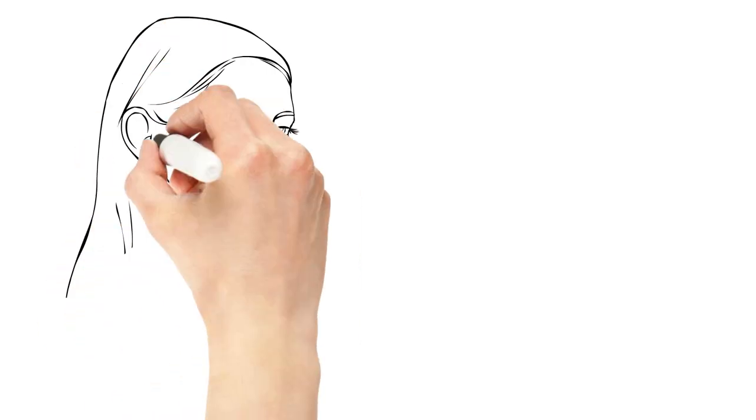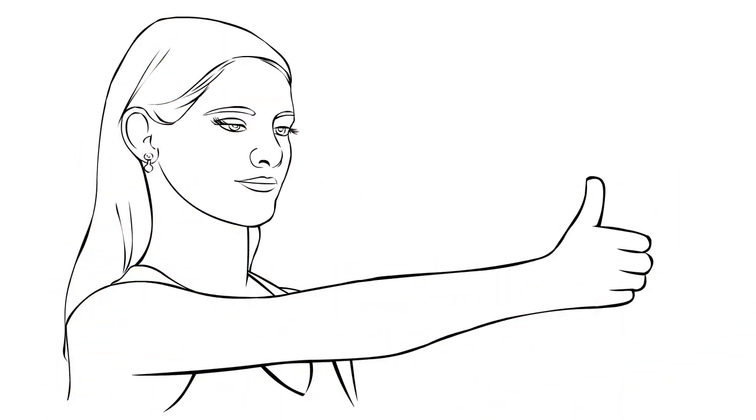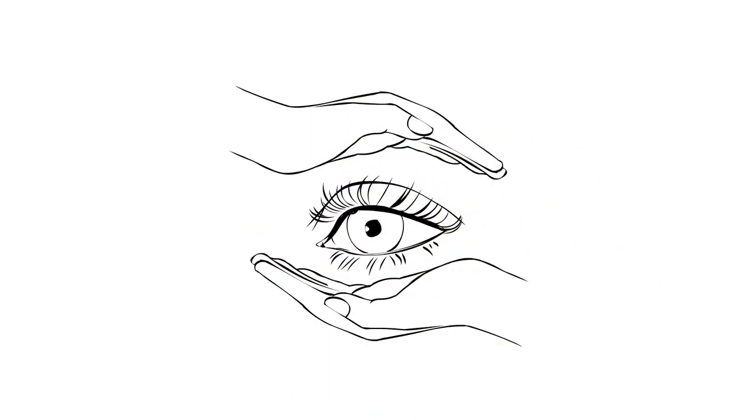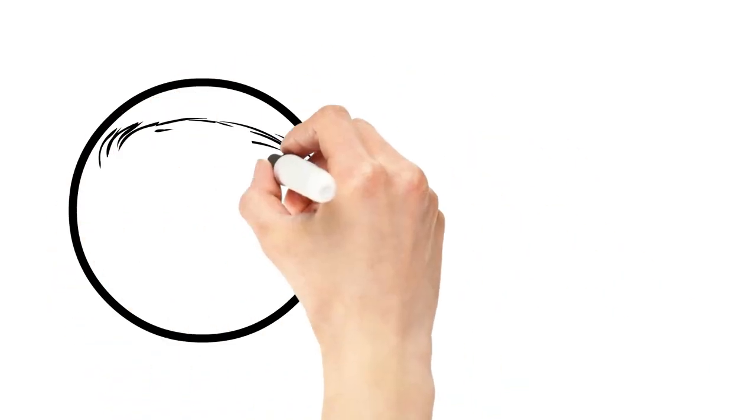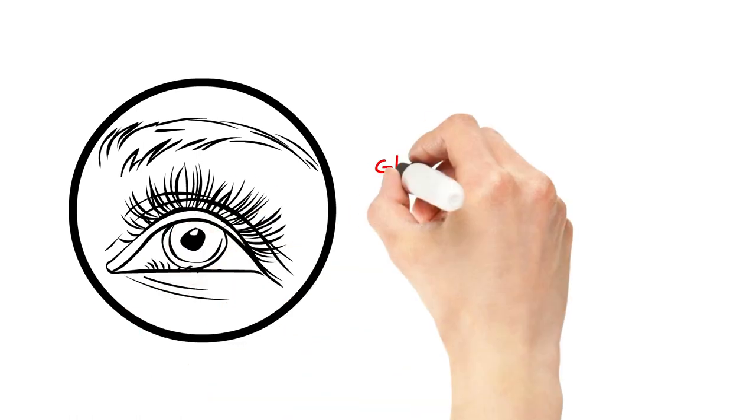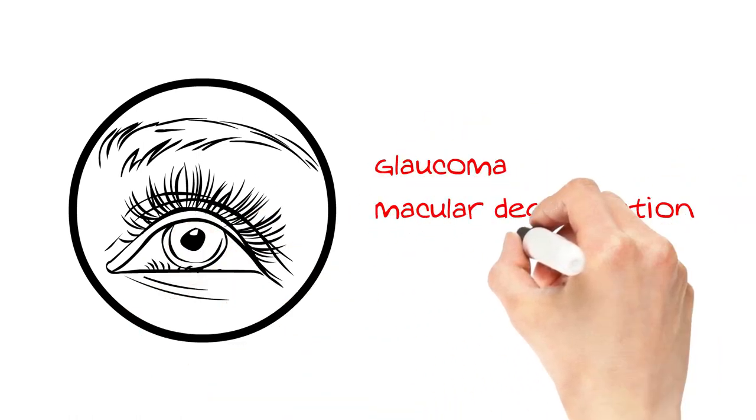These 17 vitamins, minerals, and herbal supplements are absolutely essential to your eye health. They play a critical role in the support of your eyesight as well as protecting against potentially blinding conditions like glaucoma, macular degeneration, and cataracts.